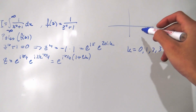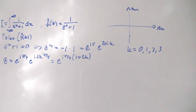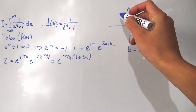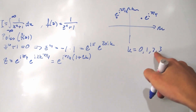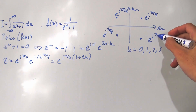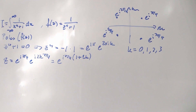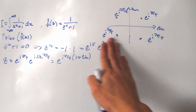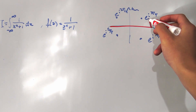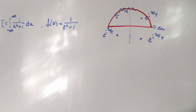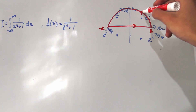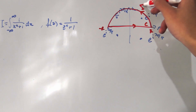Drawing the complex plane with real and imaginary axes: plugging k=0 gives e to the iπ/4, which lives in the first quadrant. Plugging k=1 gives e to the i3π/4 in the second quadrant. Plugging k=2 gives e to the i5π/4 in the third quadrant. Finally, k=3 gives e to the i7π/4 in the fourth quadrant. Now that we've established our poles, let's define our contour. We'll use a semicircular contour, running from negative R to R along the real axis, then up along the arc gamma.